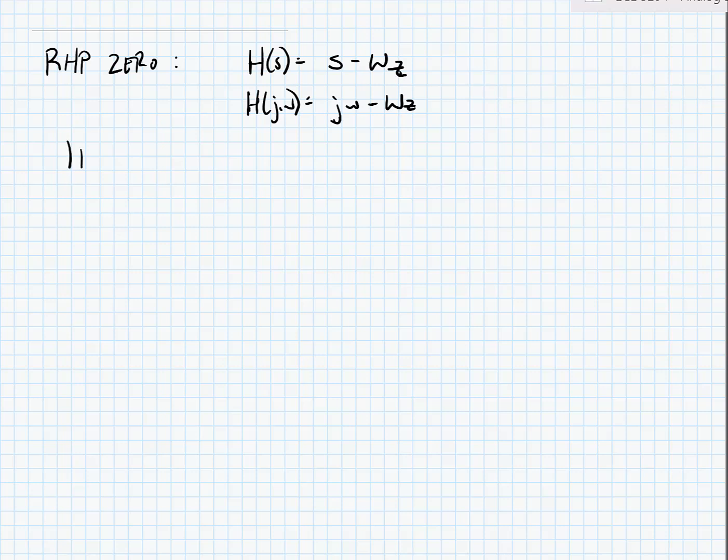And like before, we can find our magnitude of H(j omega) and our phase of H(j omega). Here the magnitude response is equal to 20 log 10 of the quantity 1 plus the quantity omega over omega z squared. You can see that this is approximately 0 dBs until omega equals omega z, and then it increases at 20 dBs per decade increase in omega.